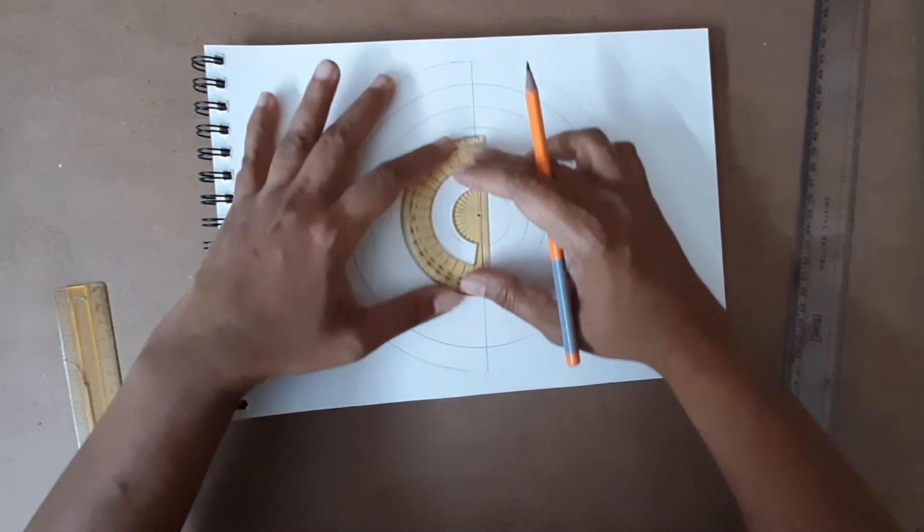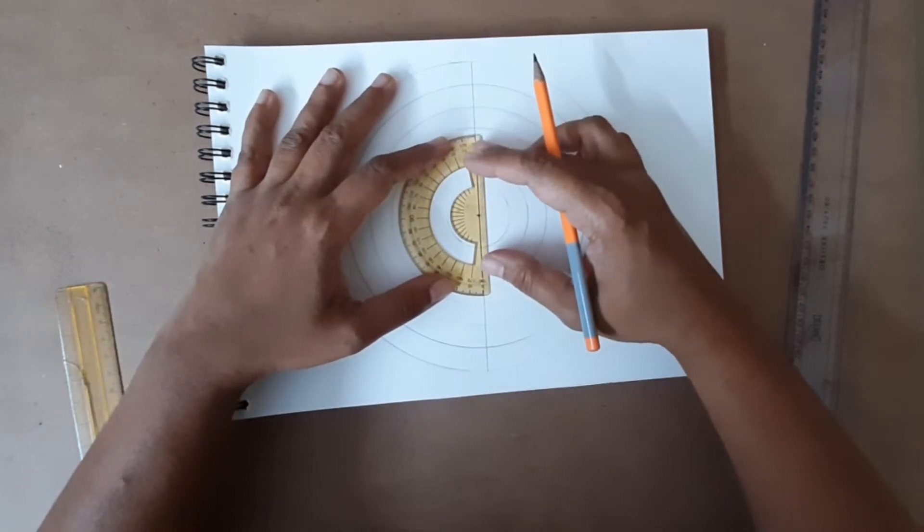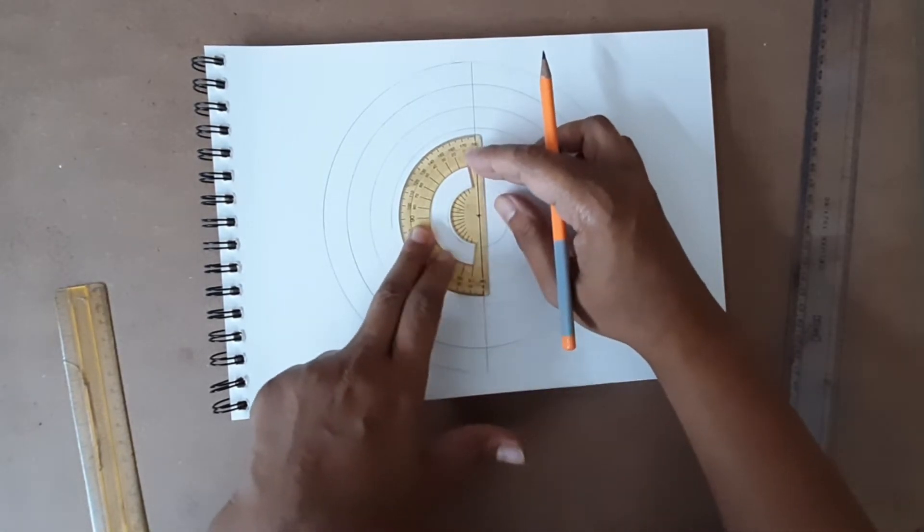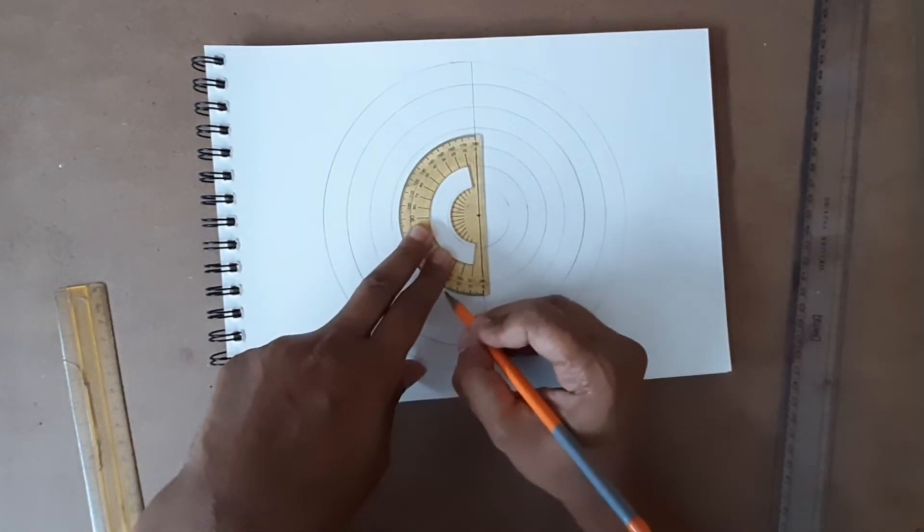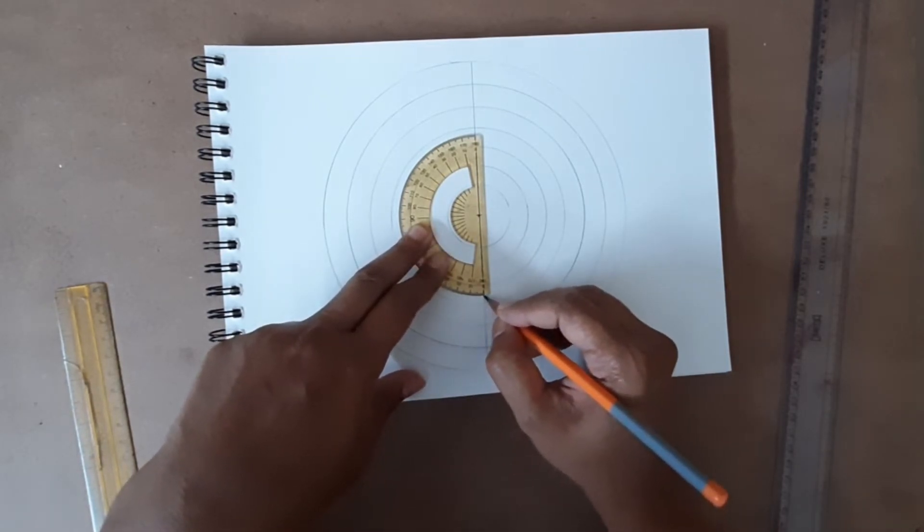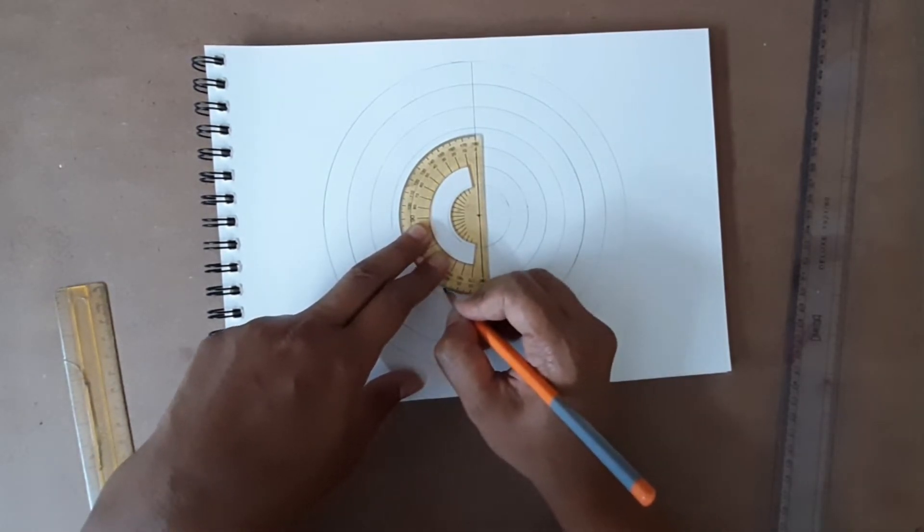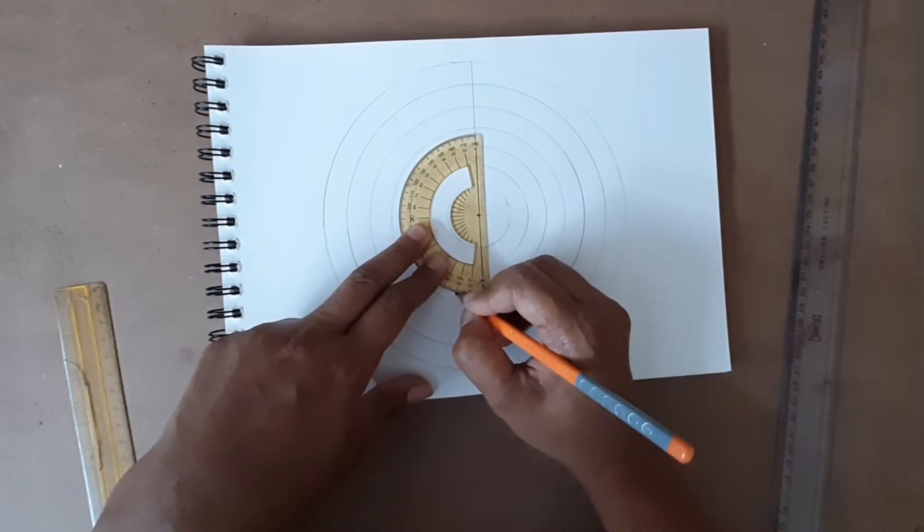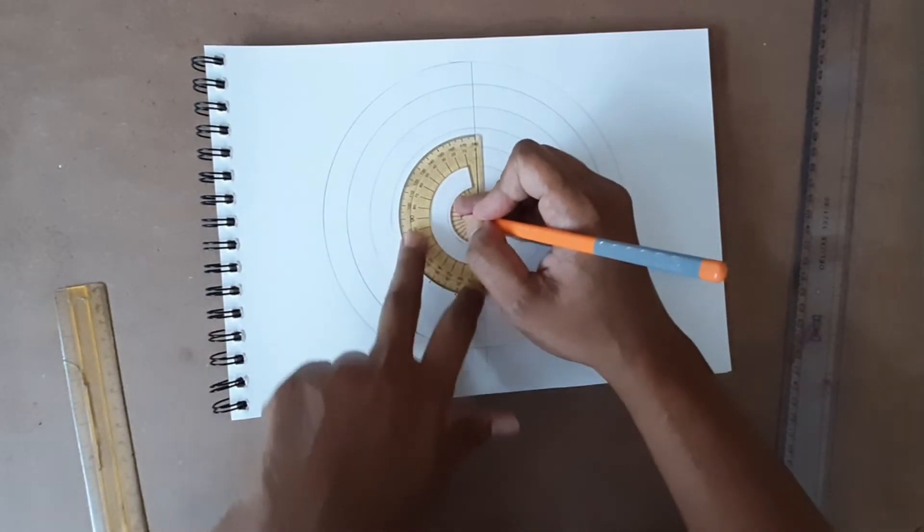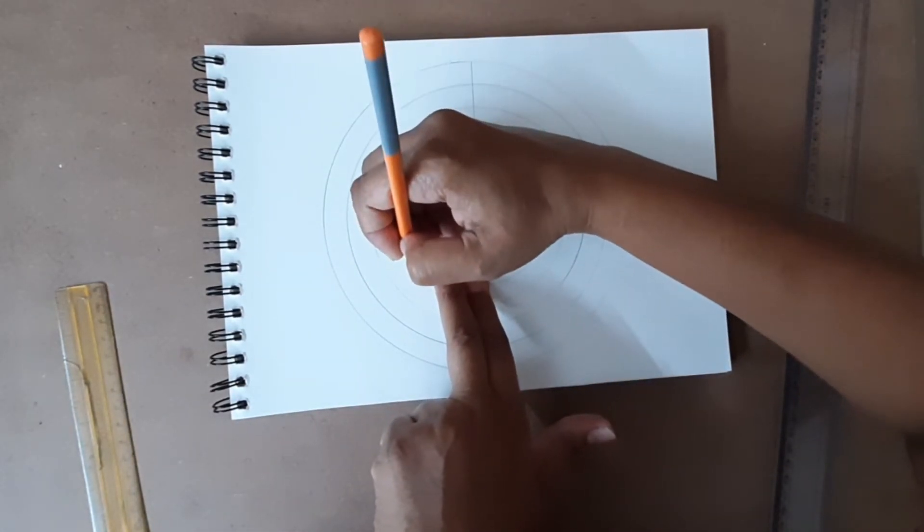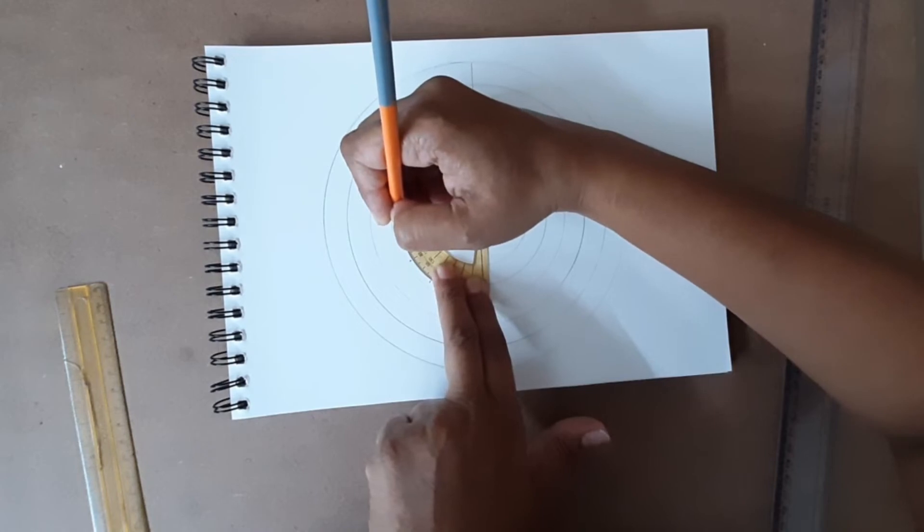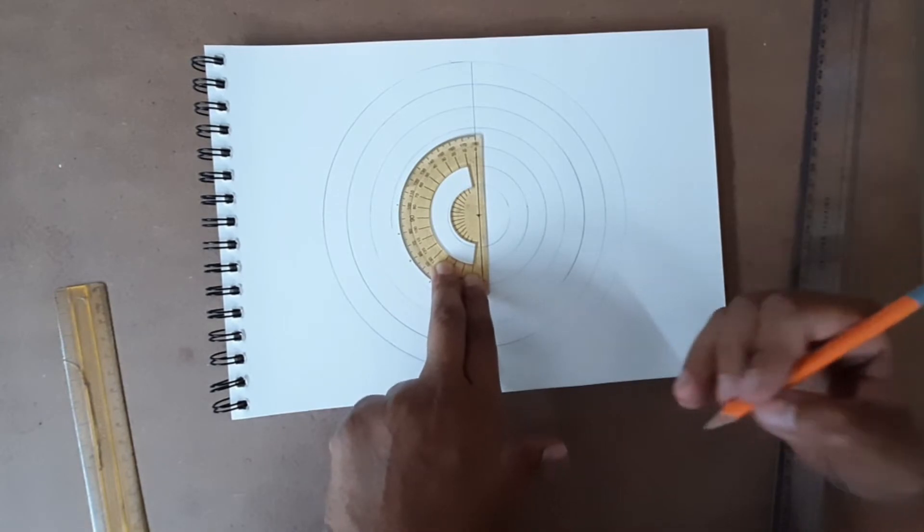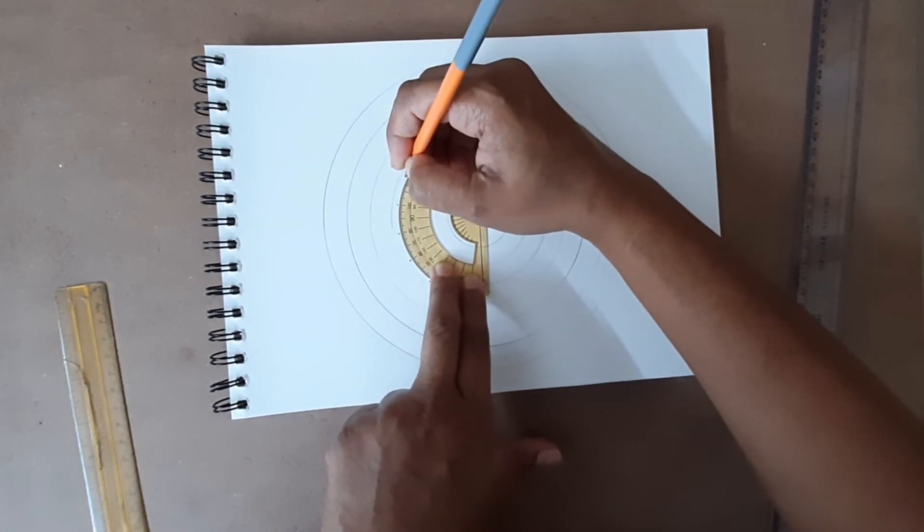Now use your protractor. For every 30 degrees we will mark. Here is zero. Maybe every 20 degrees also - we can do that now. So 20, 40, 60. See, the smaller the grid, the easier it is to make intricate mandalas.